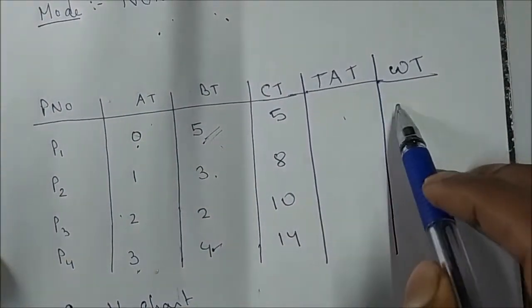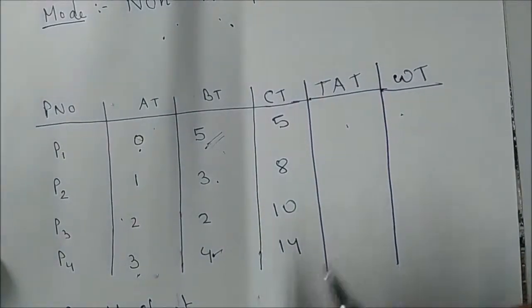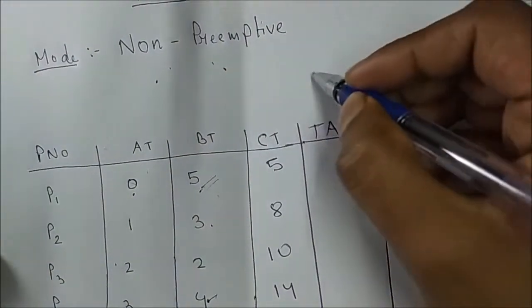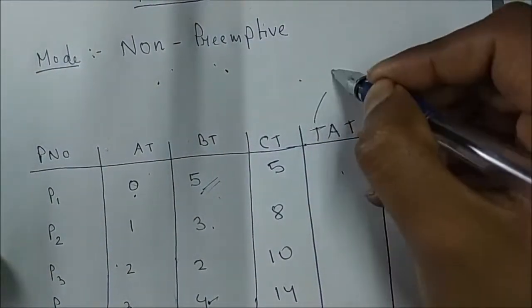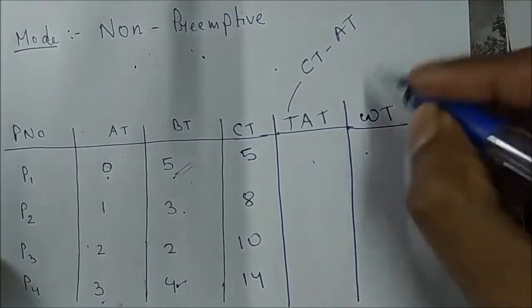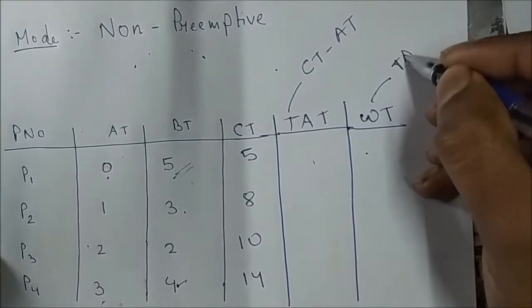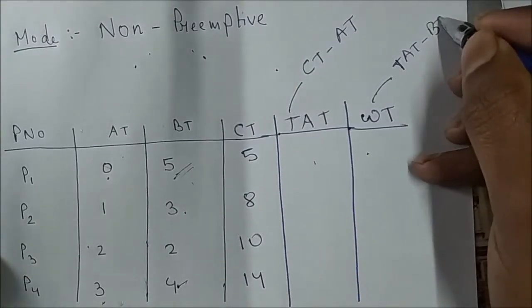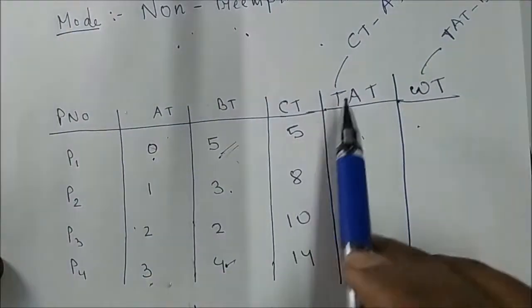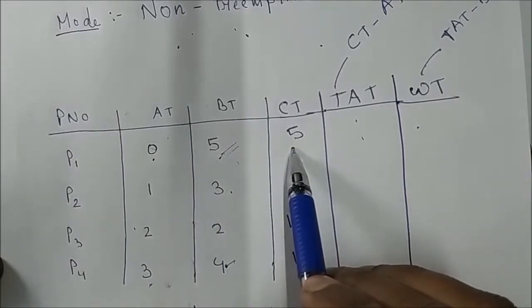Now we'll find turnaround time and waiting time. The formula for turnaround time is: Turnaround Time = Completion Time − Arrival Time. Waiting time = Turnaround Time − Burst Time. We have already found the completion time, so now we calculate turnaround time.